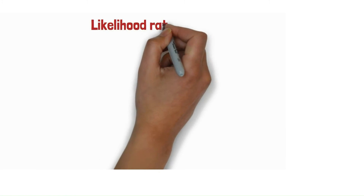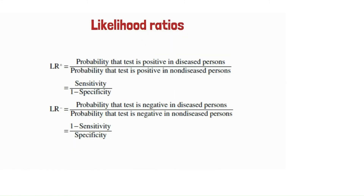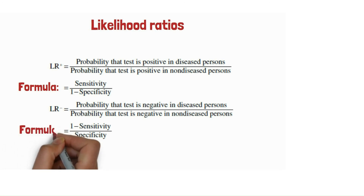Let's look at likelihood ratios. The likelihood ratio for a positive test result describes how much the odds of disease increase when a test is positive. The formula is: sensitivity divided by (1 minus specificity). The likelihood ratio for a negative test describes how much the odds of disease decrease when a test is negative. The formula is: (1 minus sensitivity) divided by specificity.